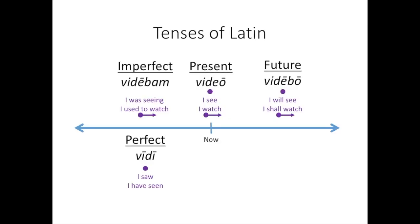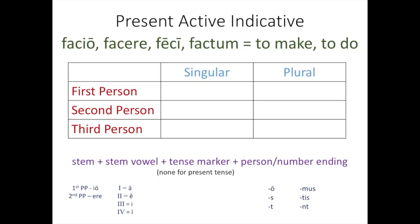So let's start with the present tense, the thing that's happening now, or that's currently ongoing and happening once. For third IO, we will use the example facio, facere, feci, factum, which is a very common verb meaning to make or to do. Just like all other verbs in the present active indicative, the first principal part is your first person singular present active indicative form. So you can just move that down into your chart.